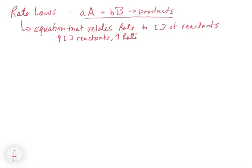For the general expression, we have aA + bB going to products, where A and B are reactants combining to give products. The little a and little b are coefficients — for example, 1A + 2B goes to products. What we're going to find out is that in terms of the rate laws, those little a's and little b's make no difference. When we write the rate law, you'll never see the little a and little b; all you'll see is the big A and big B, which are the actual reactants themselves.